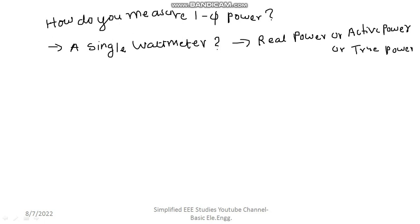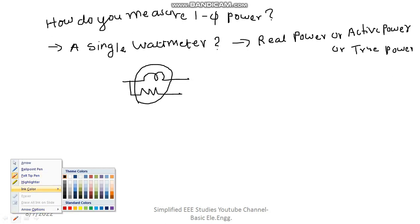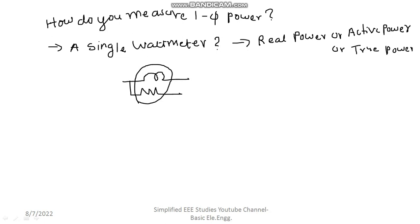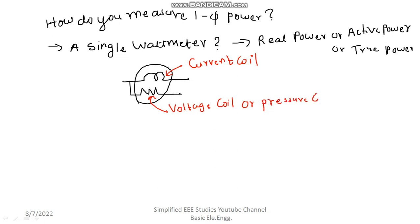How does a wattmeter look? In electric circuit diagrams, you can represent the wattmeter like this — there are two coils. Draw a circle; that is the symbol for the wattmeter. It is very clear that the wattmeter has two coils. This particular coil is your current coil, which is connected in series to the circuit. The second one is known as the voltage coil, or one can say it is a pressure coil, and that will be connected in parallel to the circuit.